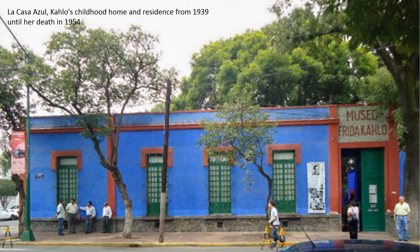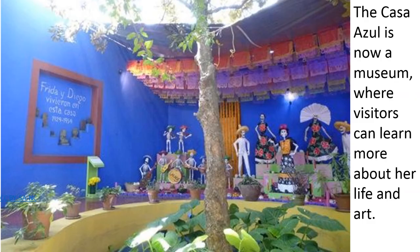The Casa Azul was Frida Kahlo's childhood home and it's where she lived for the last part of her life, from 1939 until 1954. Today it's a museum where visitors can learn more about her life and her art.